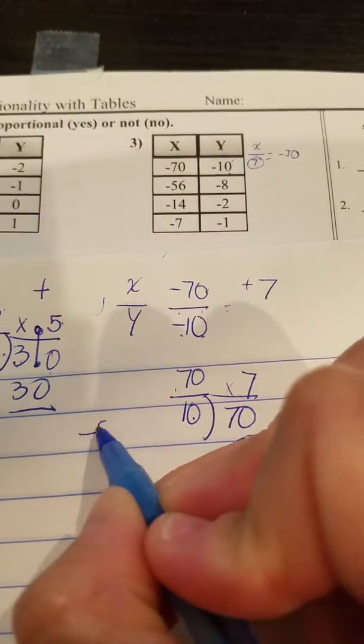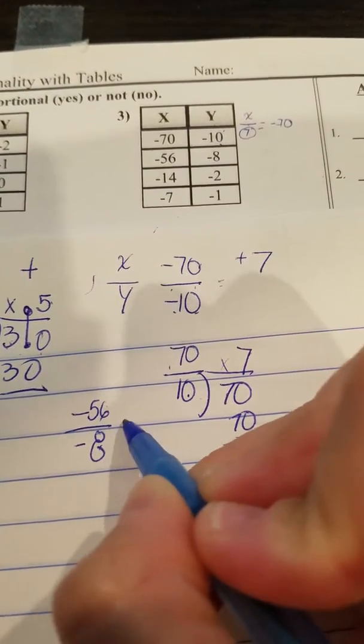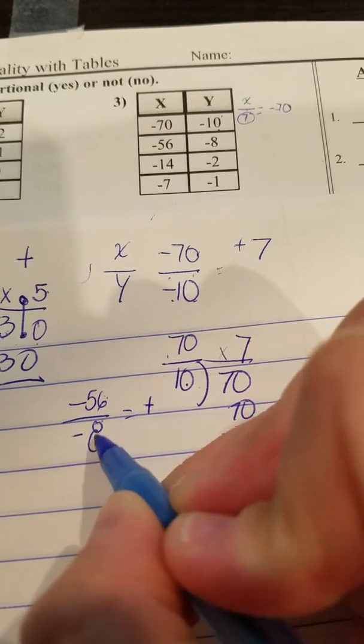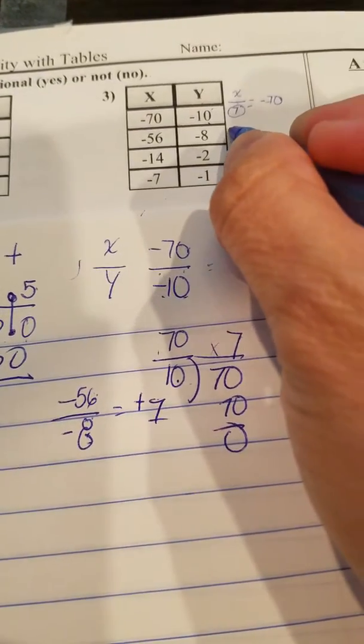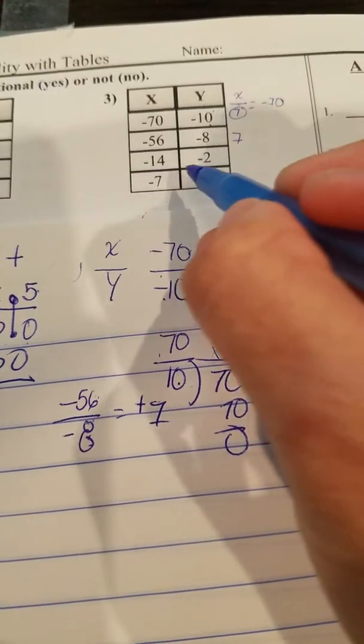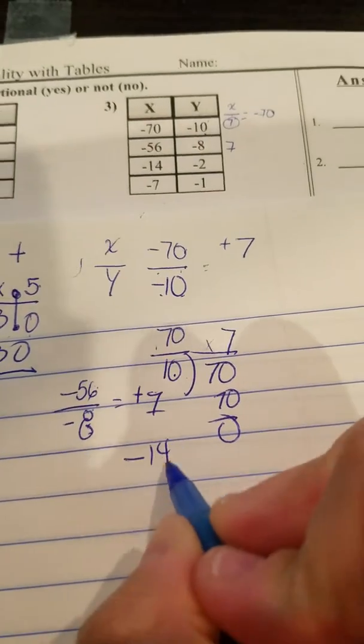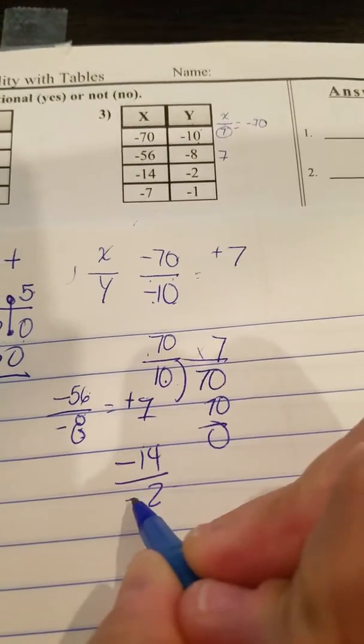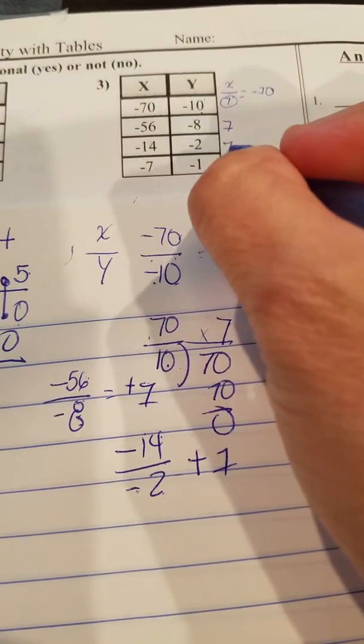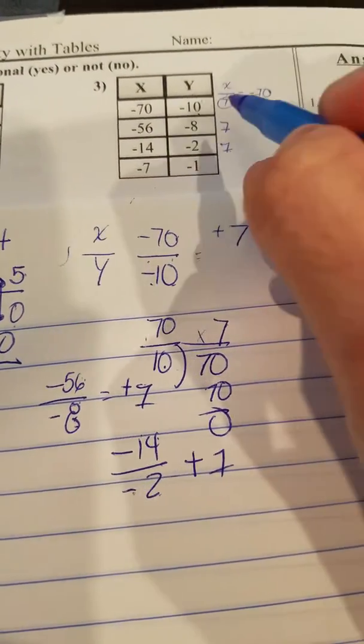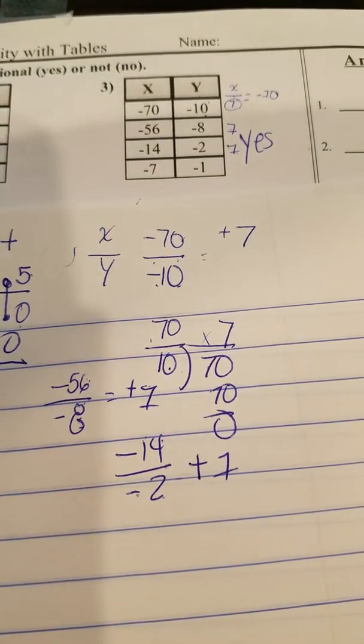Let's try this one. So negative 56 over negative 8. You know the answer is going to be a positive. And 56 divided by 8, we know it's 7. I'm not going to do that the long way. And then here, negative 14 divided by negative 2. If you don't see it already, you could do this. Negative divided by negative, you know it's a positive. 14 divided by 2, you know it's 7. So I can already start seeing this is 7, 7, 7. So yes, this one is proportional, because they're all 7.